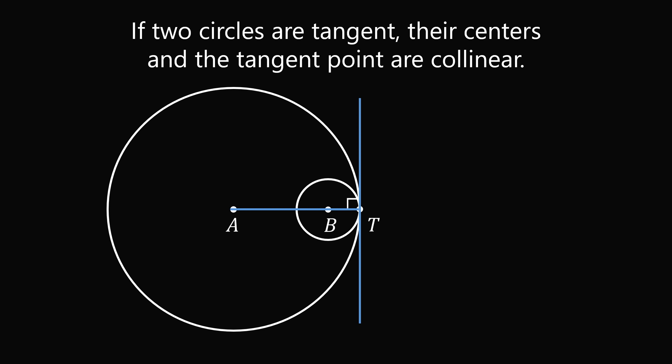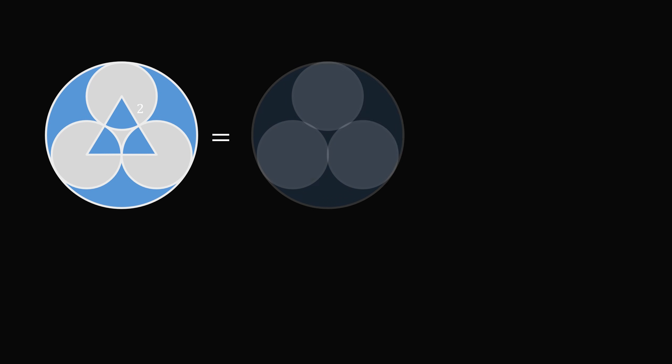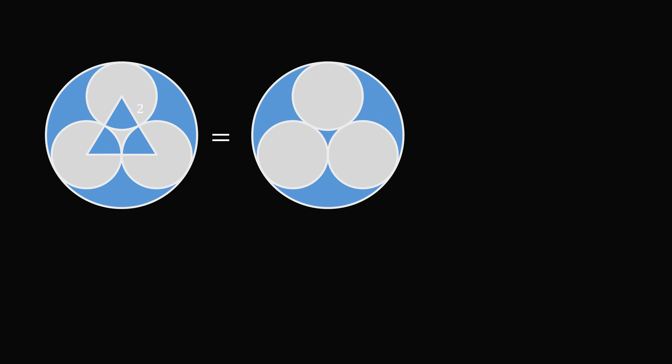Now let's solve the problem. We'll break down the total area of the regions shaded in blue as follows. It will be equal to the area bound by the large circle, subtracting out the areas of the three small circles. Then we subtract out the region that's in between the three small circles, and then we add back in the areas of the three circular sectors.